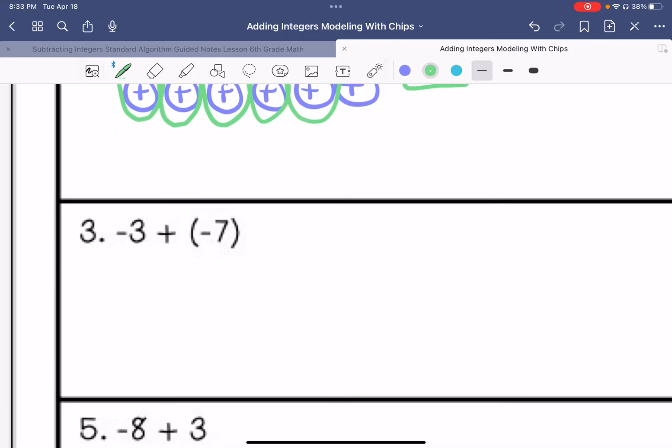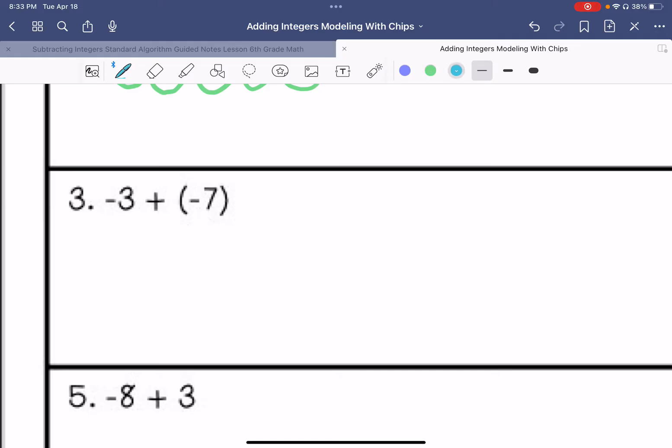Number three. We have three negatives and then seven negatives. And we can't make any zero pairs because we don't have any positives. So our answer is we have 10 negatives, so negative 10.